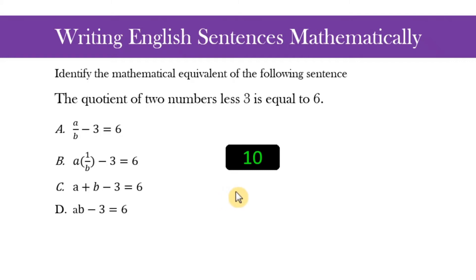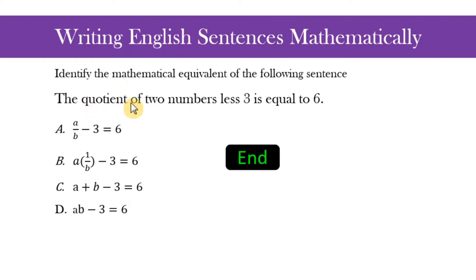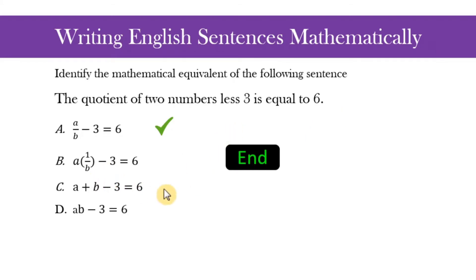Another one: the quotient of two numbers less 3 is equal to 6. Time's up. C and D are incorrect because they do not involve division. If we let the two numbers be a and b, letter A is correct — that is the quotient of a and b, less 3, equals 6. Letter B is also correct because a times one over b is just another way of writing a over b.